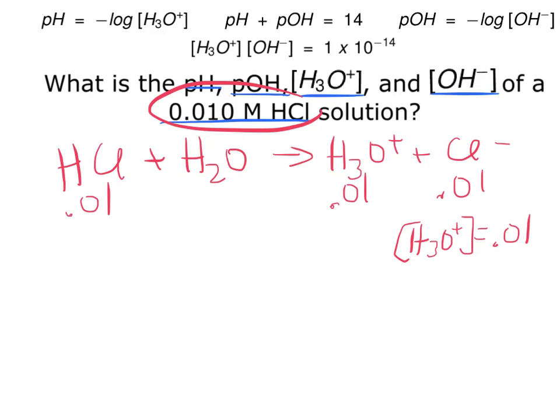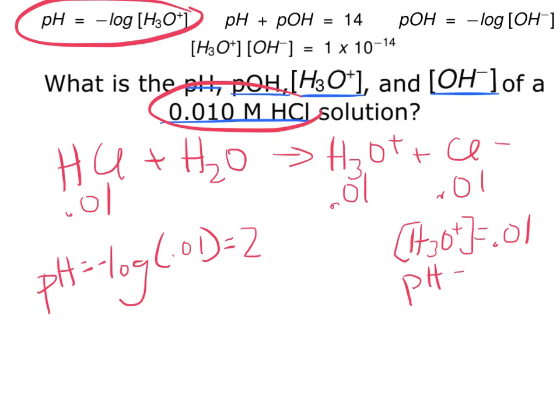Now I need to find pH. pH is the negative log of H3O+, the negative log of 0.01 is equal to 2. So pH equals 2.